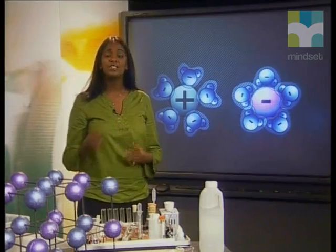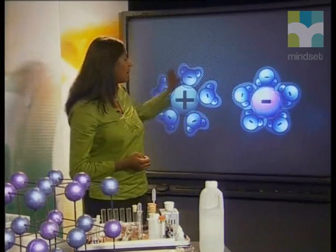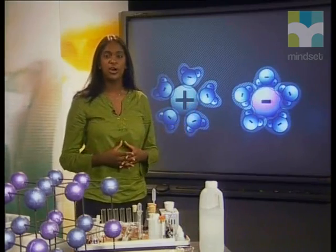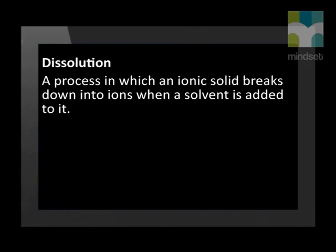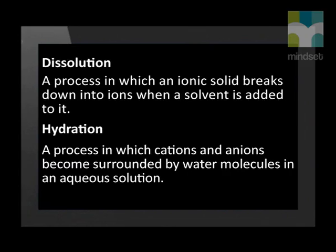Once the atoms are pulled out of the solid, they become surrounded on all sides by a sheath of water molecules. So we have seen that the process of dissolving has two stages. Stage one is the process in which an ionic substance breaks up into separate ions in water. Stage two is when the water molecules surround these ions. Dissolution is the process where an ionic solid breaks down into ions when a solvent is added to it.